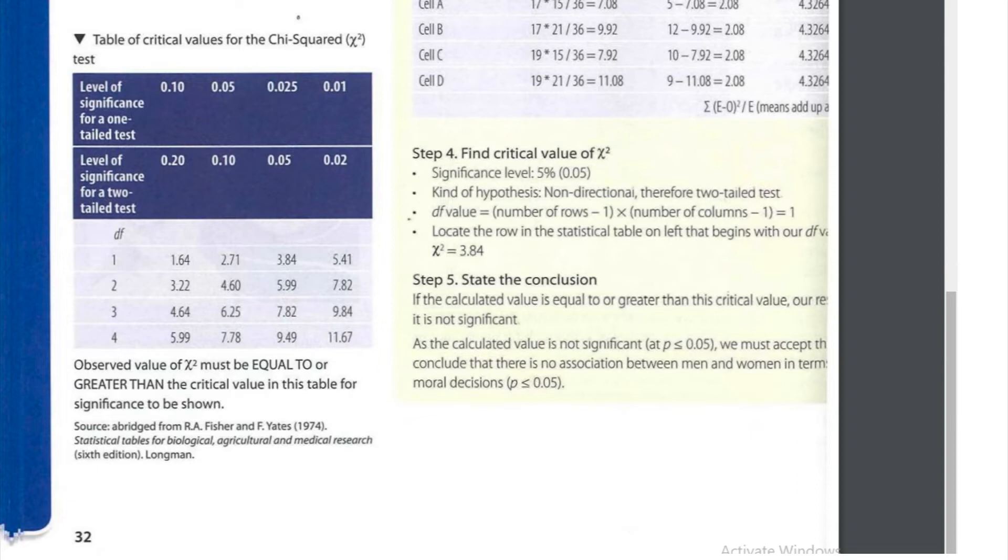Secondly, we want to know what level of significance are we going to choose? Well, we're going to choose 0.05, that's the one that we always default to. Unless, for example, we're doing medical research or replicating a previous study, in which case we might use a more stringent level of significance, 0.01, but we're going to go for 0.05 today.